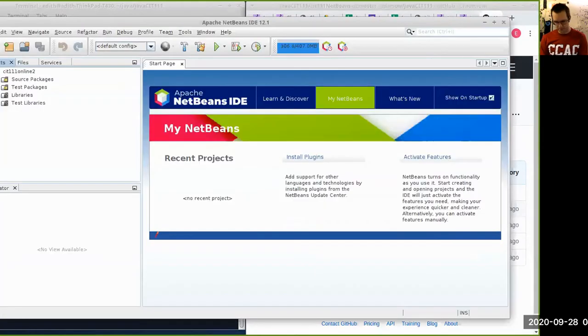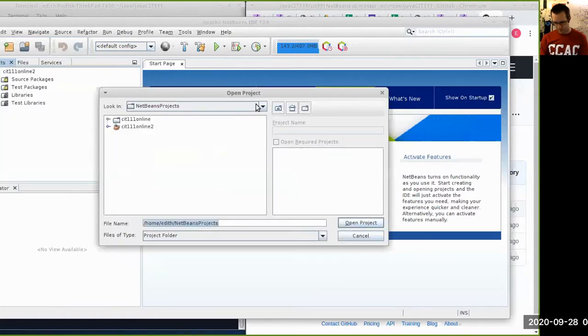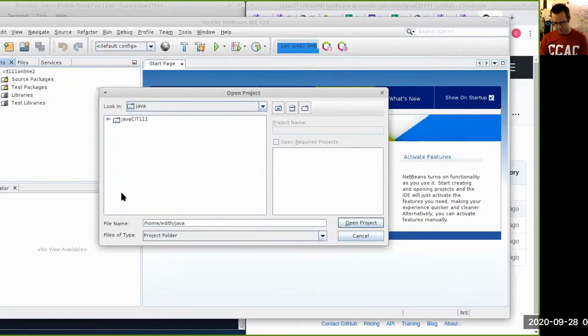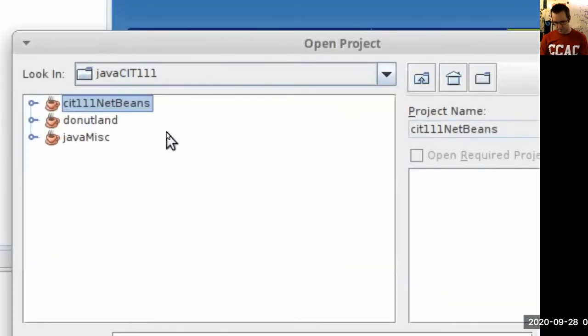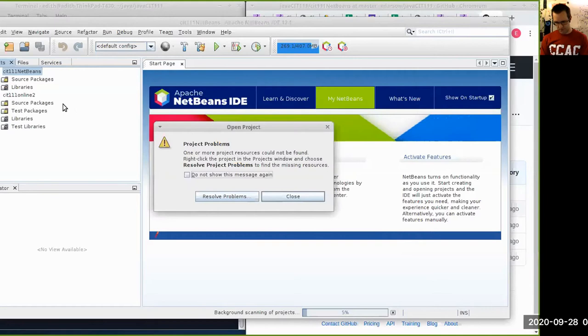So one of the handy things is that I created a net beans project that lives inside CIT 111 net beans that contains some directives. So net beans can turn it into a functioning project. So if I load up net beans here, I can then say file open project. And if I navigate into my Java directory that I just made into CIT 111 and then net beans, look, it recognizes that CIT 111 net beans is in fact a Java project, a little cup of coffee next to it. So if I say open project,